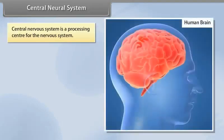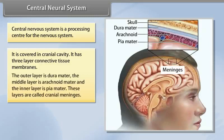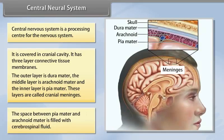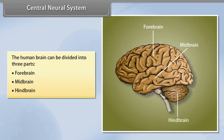Central nervous system is a processing center for the nervous system. It is covered in cranial cavity. It has three-layer connective tissue membranes: the outer layer is dura mater, the middle layer is arachnoid matter, and the inner layer is pia mater. These layers are called cranial meninges. The space between pia mater and arachnoid matter is filled with cerebrospinal fluid. The human brain can be divided into three parts: forebrain, midbrain, and hindbrain.